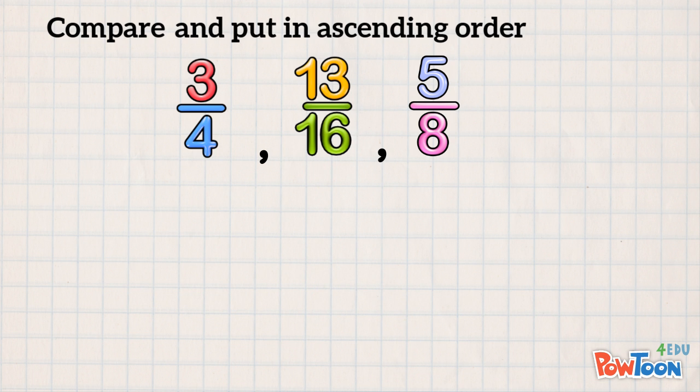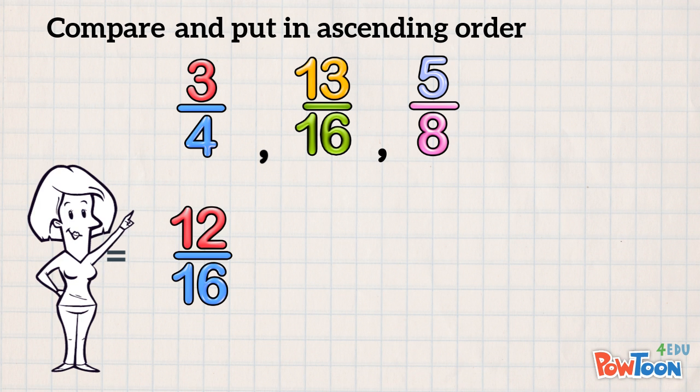Remember what to do? How do we turn 4 into 16 using multiplication? We multiply by 4! And whatever we do to the bottom, we've got to do to the top! So 3 times 4 is 12! That's one new equivalent fraction!